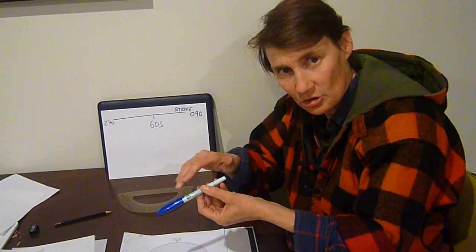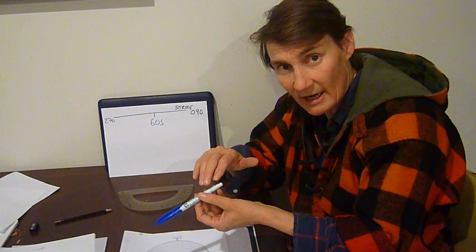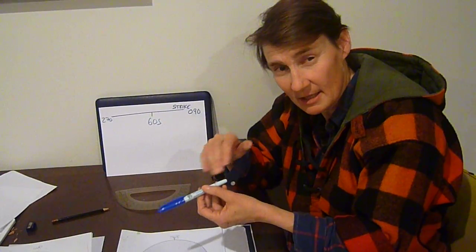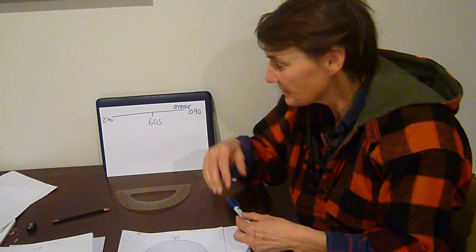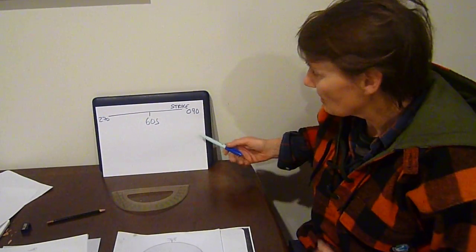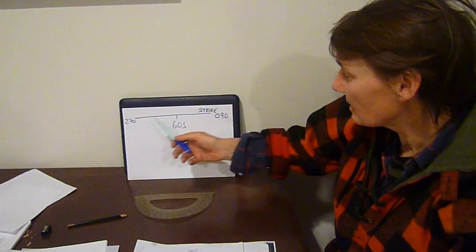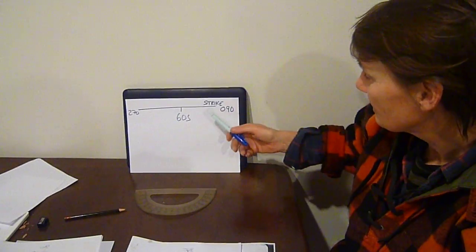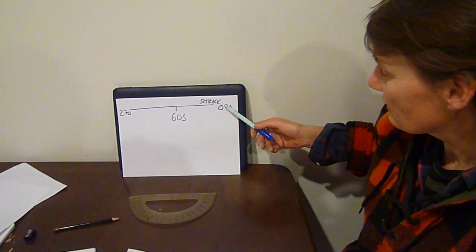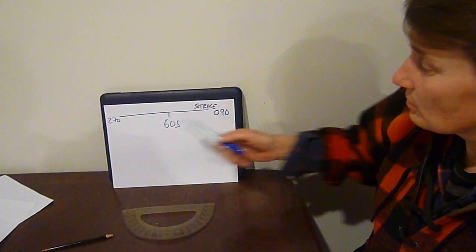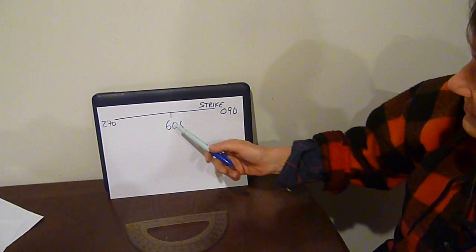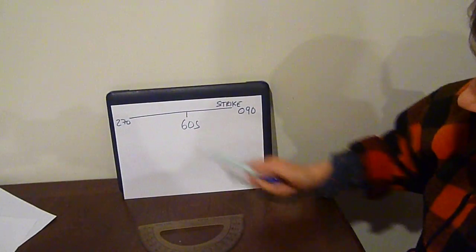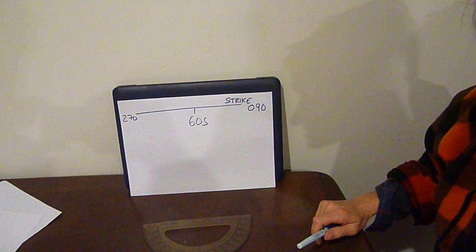I'm going to show you a different way to describe a line in space, and it's with reference to a plane. For example, we could have a plane here that has a strike of 090, or you could say 270, and dip 60 degrees to the south.